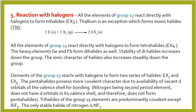Now, reaction with halogens. All the elements of group 13 react directly with halogens to form trihalides. Thallium is an exception, forming monohalide TlX. For group 14 elements, they react directly with halogens to form tetrahalides. The heavier elements germanium and lead also form dihalides, and the stability of dihalides increases down the group. The ionic character of halides also increases steadily down the group. Elements of group 15 react with halogens to form two series of halides: EX3 (trihalides) and EX5 (pentahalides).